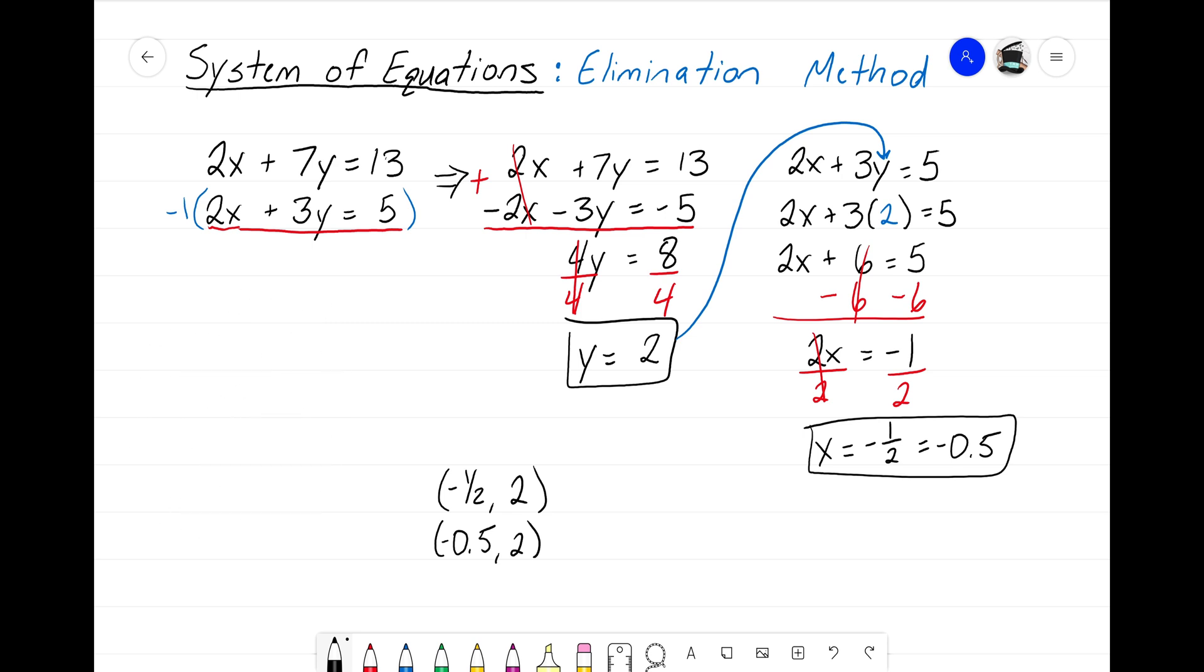Now a word of caution. Whenever we write our coordinate point, we always write x and then y. Now we solved for y first. So a big mistake that students often make is when they write this out, they write the 2 first and then they write the x value. That would be incorrect. We always want to write our x value first and then our y value.